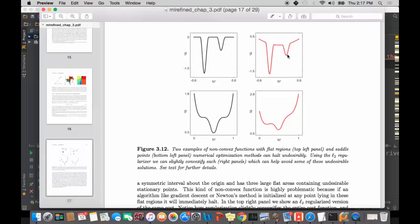Likewise, if on the original cost function we initialized over here where the cost was flat, we wouldn't have gone anywhere. But by slightly convexifying the full cost function, if we initialize on that same point on the L2 regularized cost, that's now a convex portion of the function, and we're going to travel downward to this global minimum.